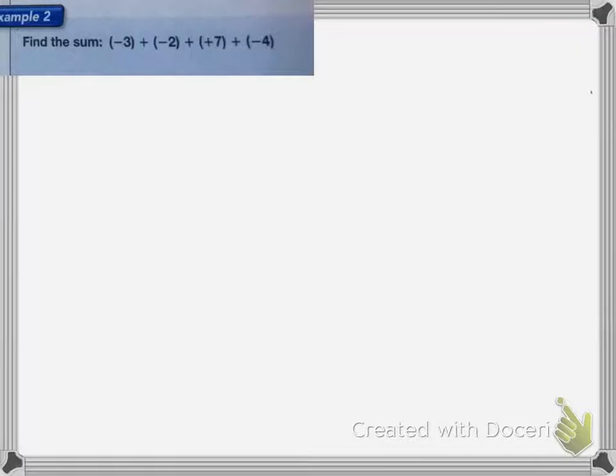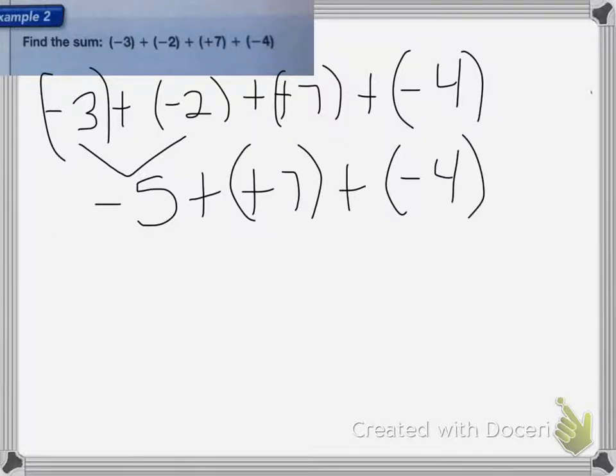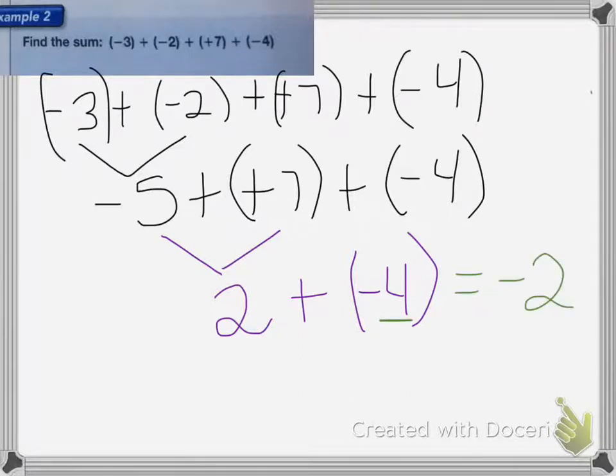With this next one, we need to find the sum, and there's two ways to do it. The first way is to do the problem from left to right. Going from left to right, I'll do negative 3 minus 2, plus negative 2 equals negative 5. Then I rewrite the equation, dropping down everything we haven't used yet. Now I'll do negative 5 plus positive 7, which equals 2 plus negative 4. And finally, 2 plus negative 4 equals negative 2, since that negative is bigger than the positive.